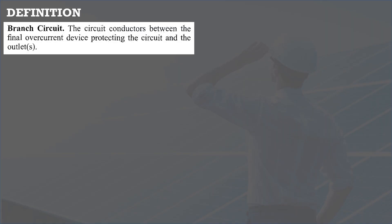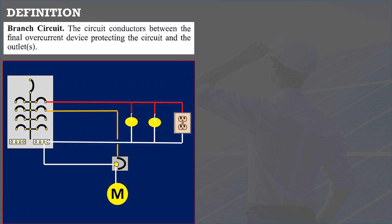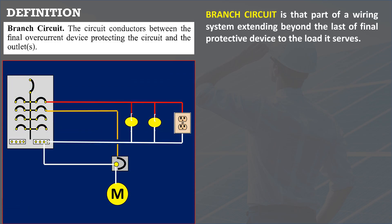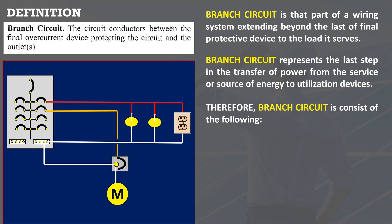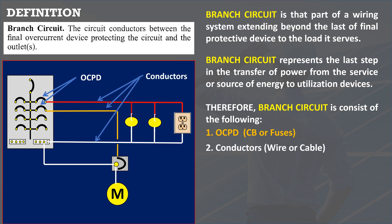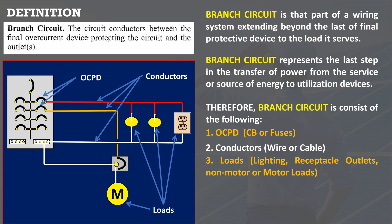In code definition, a branch circuit is the circuit conductor between the final overcurrent device protecting the circuit and the outlets. As shown in the figure, the branch circuit extends beyond the final protective device to the load it serves, representing the last step in transferring power from the service or energy source to the utilization device. Therefore, a branch circuit consists of: 1. Overcurrent protective device, which can be a fuse or circuit breaker. 2. Conductors. And 3. Loads, which can be lighting, receptacles, any non-motor load, or a motor.